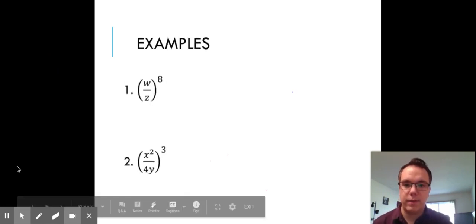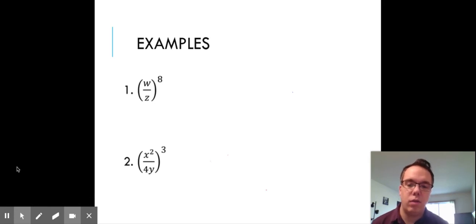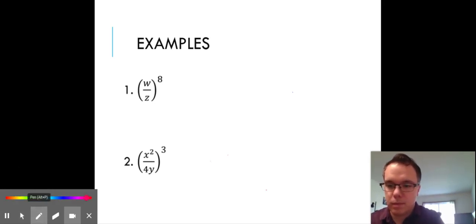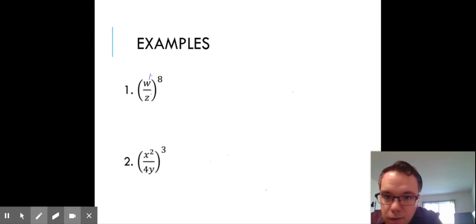So I have two examples. The first one is (w/z)^8. So remember there's a hidden first power on the w and a hidden first power on the z. So if we multiply our exponents together, 1 times 8 is 8.